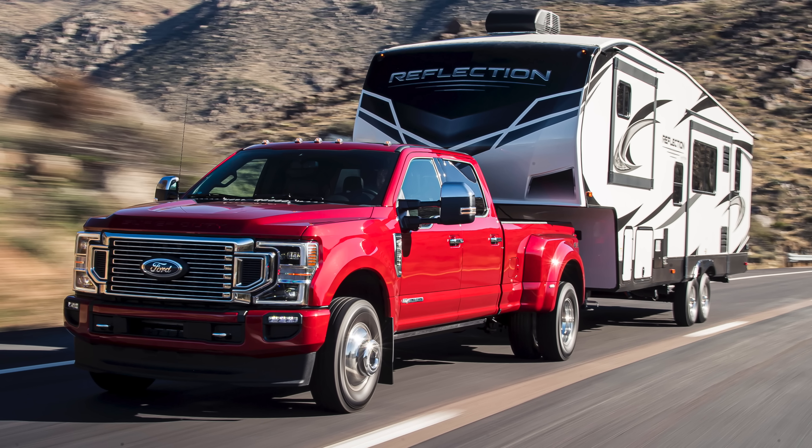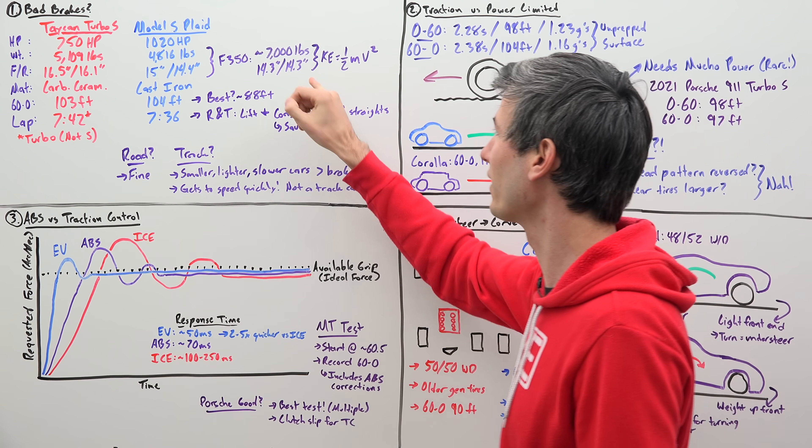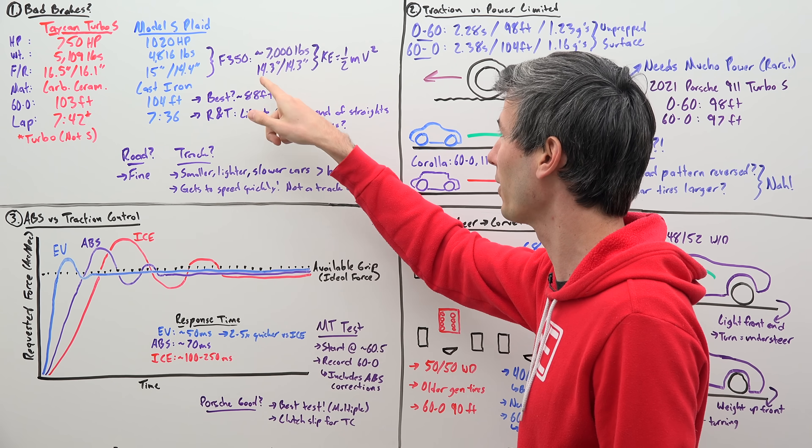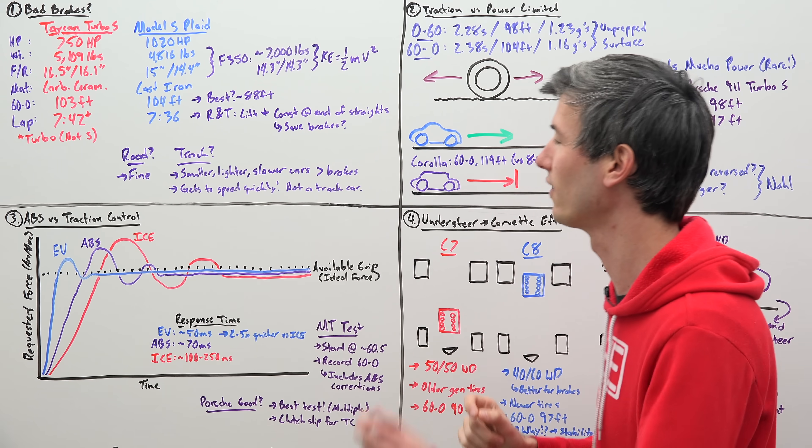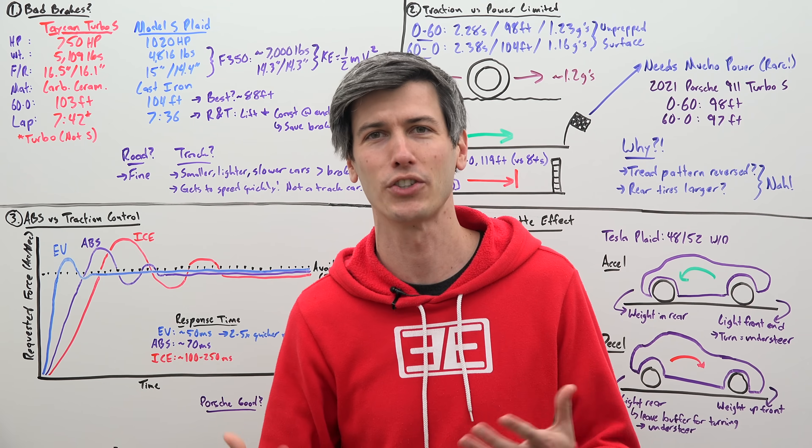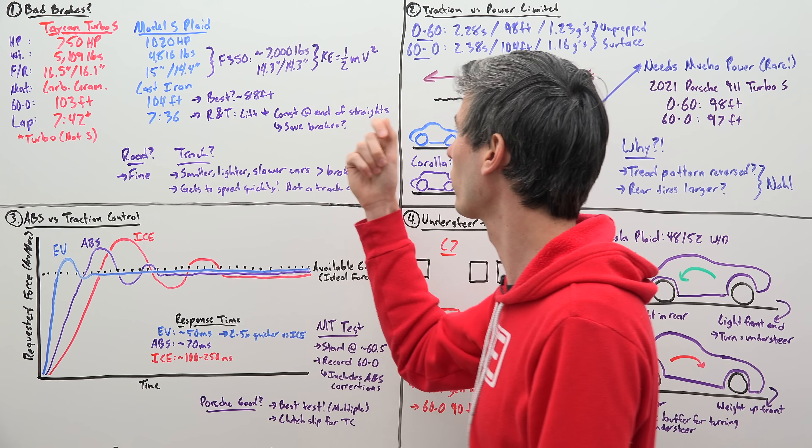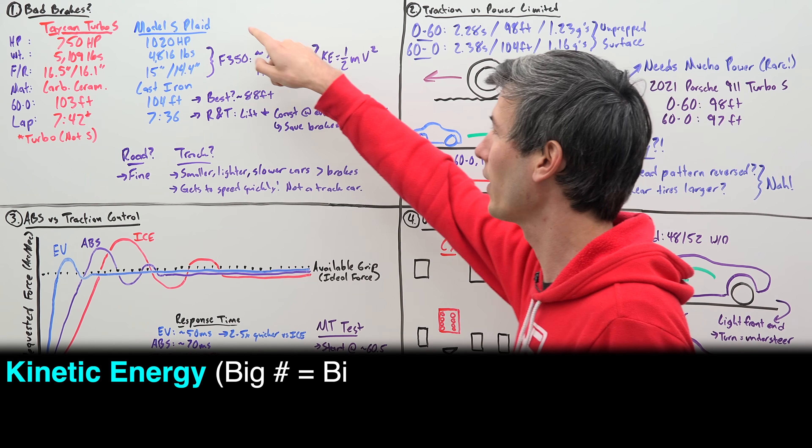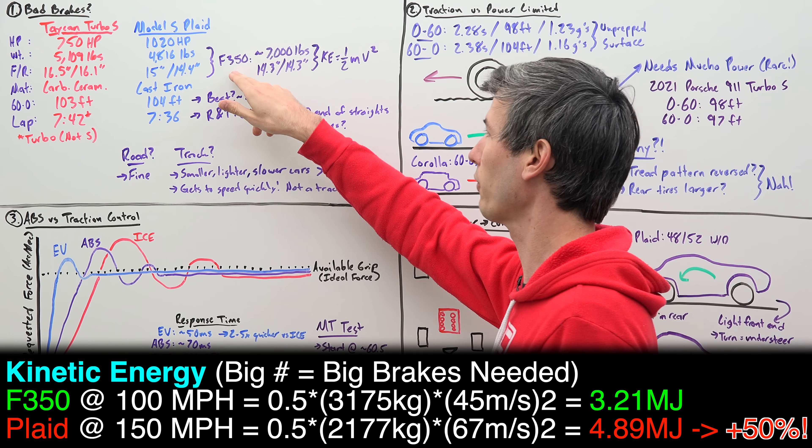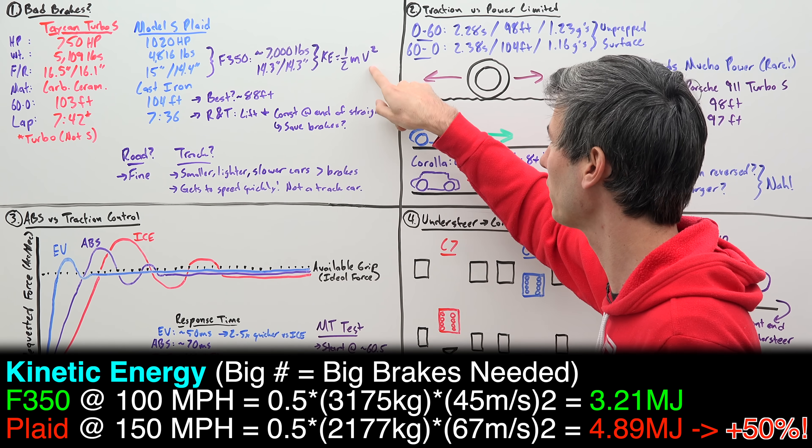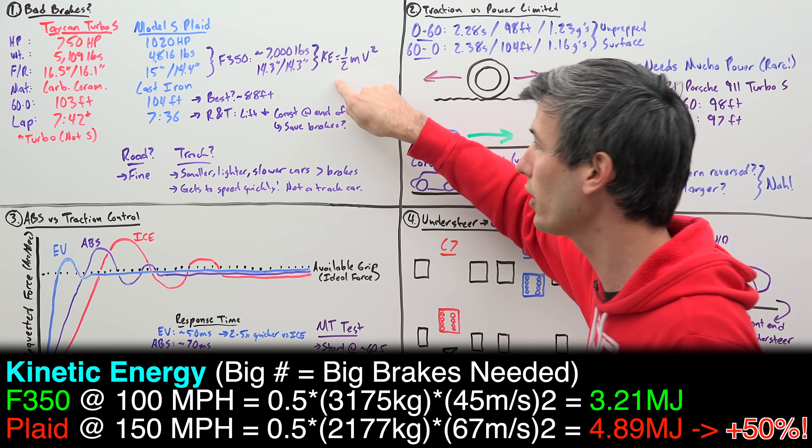Now does that mean everything? Well look at a Ford F-350. This is a vehicle that weighs 7,000 pounds with 14.3 inch brakes up front and in the rear. So the Tesla is bigger both front and rear than a 7,000 pound truck, right? These aren't small brakes by any means, but something to take into consideration is braking is all about kinetic energy. The car's moving really fast and you have to put that kinetic energy somewhere. Kinetic energy is 0.5 times mass times velocity squared. A Model S Plaid traveling at 150 miles per hour has about 50% more kinetic energy than a Ford F-350 traveling at 100 miles per hour. You have that velocity squared so that's very important.